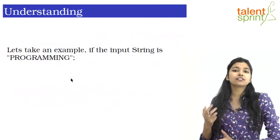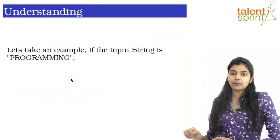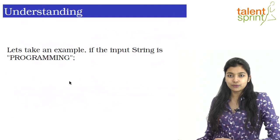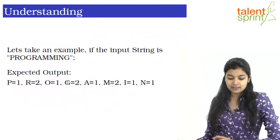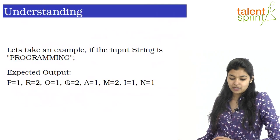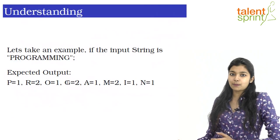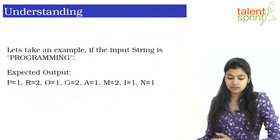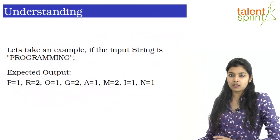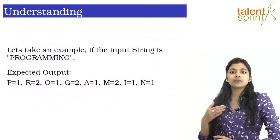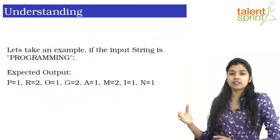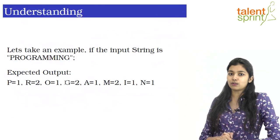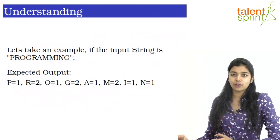For the string 'programming' the output would look something like this: P is coming once, R is coming twice, O is coming once. Similarly, we go ahead and print the whole output.